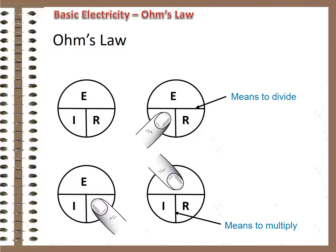Since this stable relationship exists, it's possible to determine any one value in a circuit if you know the other two. The diagram here shows you how that is possible. This circle shows the relationship — cover the value you want to know, and the calculation you need to do is revealed. This is an algebraic manipulation of the formula E equals I times R, but don't let that scare you. Remember this circle and you can solve Ohm's Law problems.